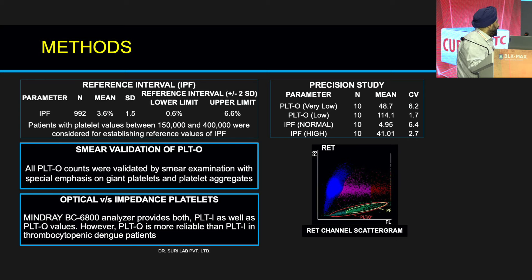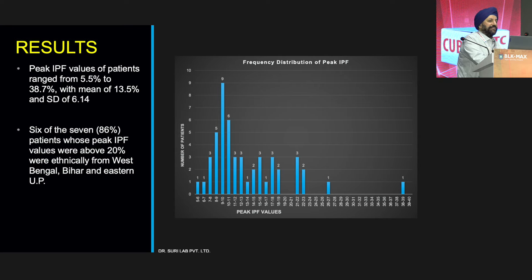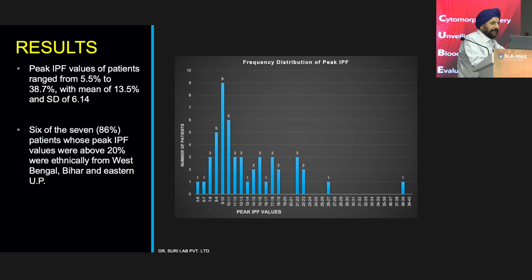We also established the biological reference interval, did a precision study, and performed smear validation for all patients. Peak IPF values ranged from 5.5% to 38.7% with a mean of 13.5% and standard deviation of 6.4%, which means we could not set a single ballpark figure — IPF had to be followed as a trend analysis because each patient has a different peak IPF value. Notably, 86% of patients with peak IPF above 20% were ethnically from West Bengal and Bihar — the Harris Platelet Syndrome belt — which had implications for establishing normal IPF ranges from Eastern India, roughly 2 to 3 times those from Northern India.